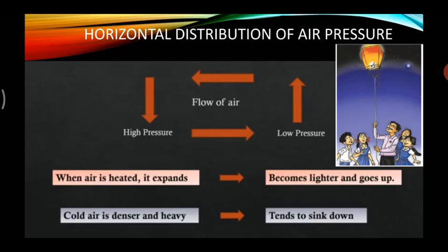Similarly, air masses on the earth's surface become lighter when heated, move upward, and create low pressure. Cold air is denser and heavy — it tends to sink down. When temperature is low, the air masses become dense, creating high pressure. A vacuum gets created where air pressure is low, and therefore high pressure air moves towards low pressure. In this manner, the flow of air is from high pressure to low pressure.